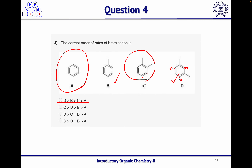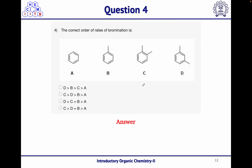So the answer is D > B > C > A. D has the greatest rate as it is disubstituted with all positions being ortho or para to both methyl groups. Then comes B, then C, and A — unsubstituted benzene — has the least rate.